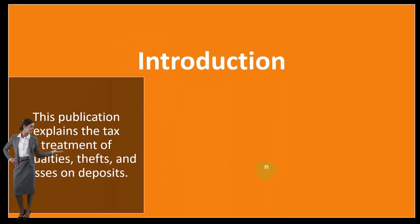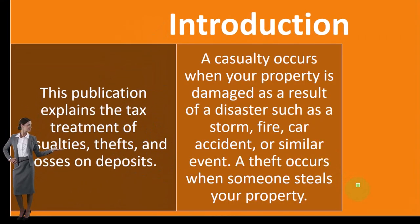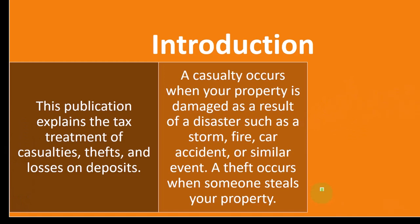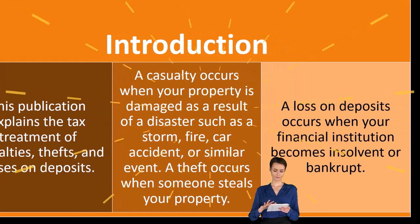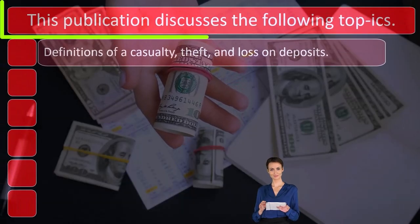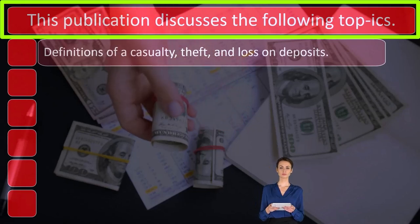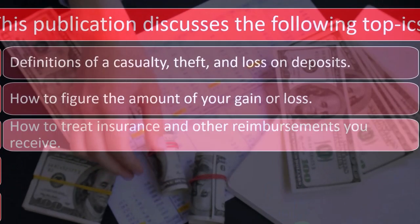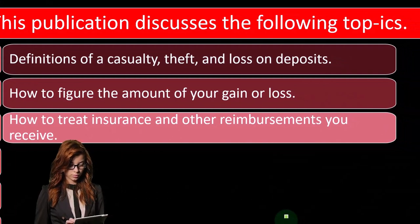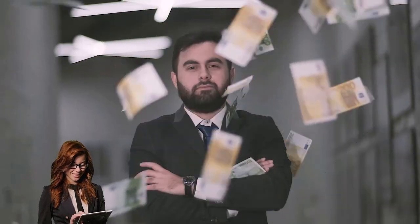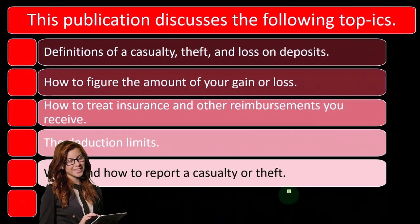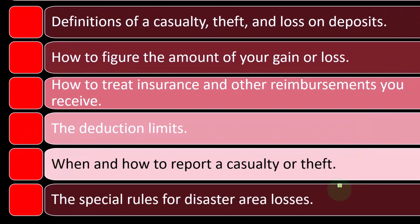Publication 547 explains the tax treatment of casualty, theft, and losses on deposits. A casualty occurs when your property is damaged as a result of a disaster such as a storm, fire, car accident, or similar event. A theft occurs when someone steals your property, and a loss on deposit occurs when your financial institution becomes insolvent or bankrupt. Topics covered include: definitions of casualty, theft, and loss on deposits; how to figure the amount of your gain or loss; how to treat insurance and other reimbursements — a key component since insurance recoup part of the losses — deduction limits; when and how to report a casualty or theft; and special rules for disaster area losses.